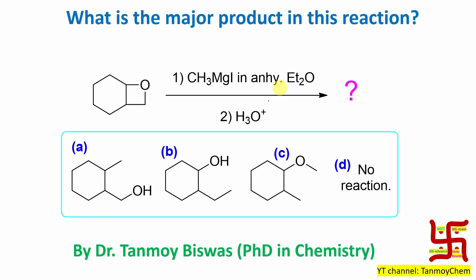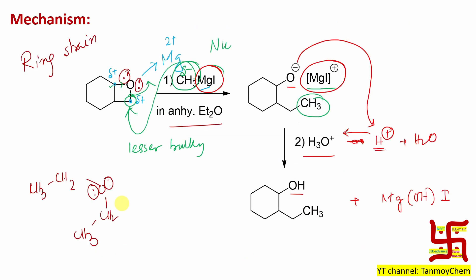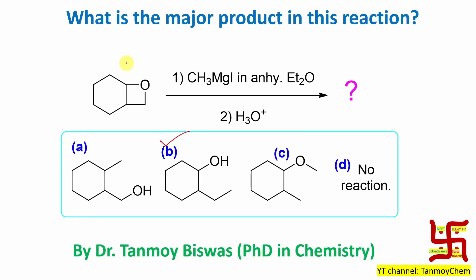Now, what is the major product of this reaction? Obviously, ethyl group with OH. So, option B is the right answer. Now, why not option A? During the mechanism study, I showed that nucleophilic attack at this side is not possible because it is more bulky. So, that product is option A. So, it is not possible.